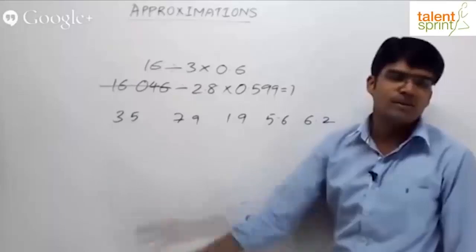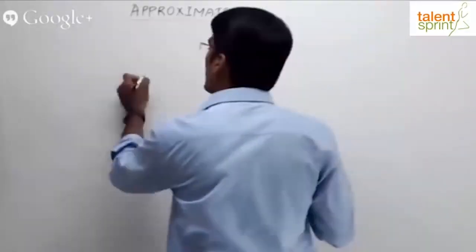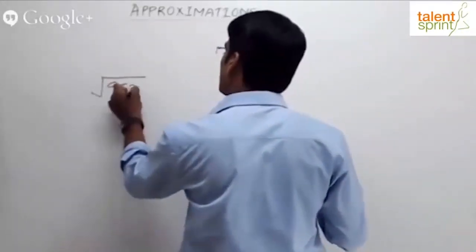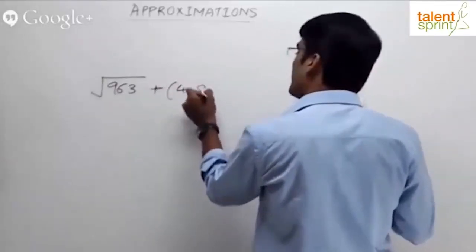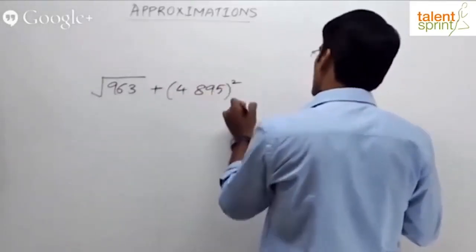Square root of 9.63 plus 4.895 whole squared minus 9.24 equals to what?